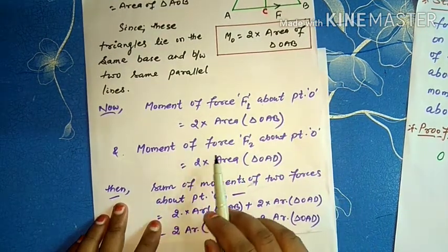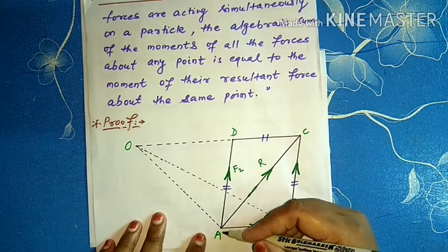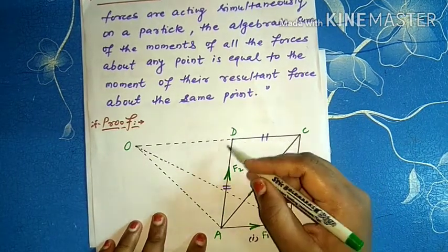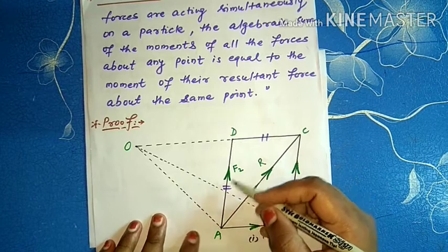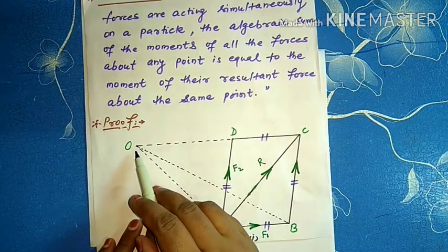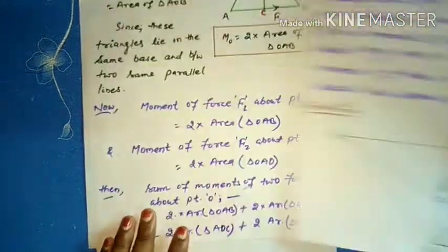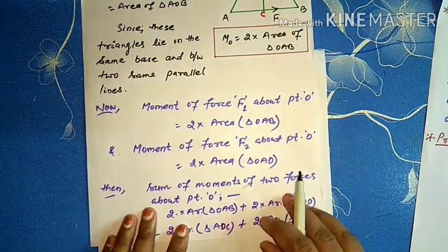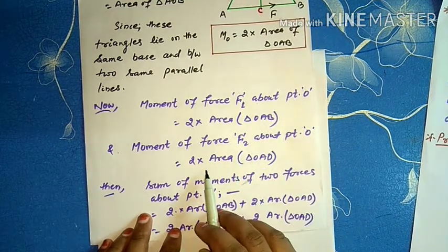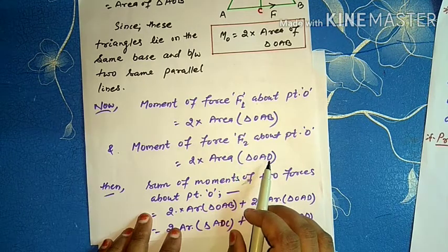Similarly, the moment of force F2 about point O — F2 lies in triangle OAD — so the moment of force F2 about point O, from the geometrical meaning, equals 2 times the area of triangle OAD.